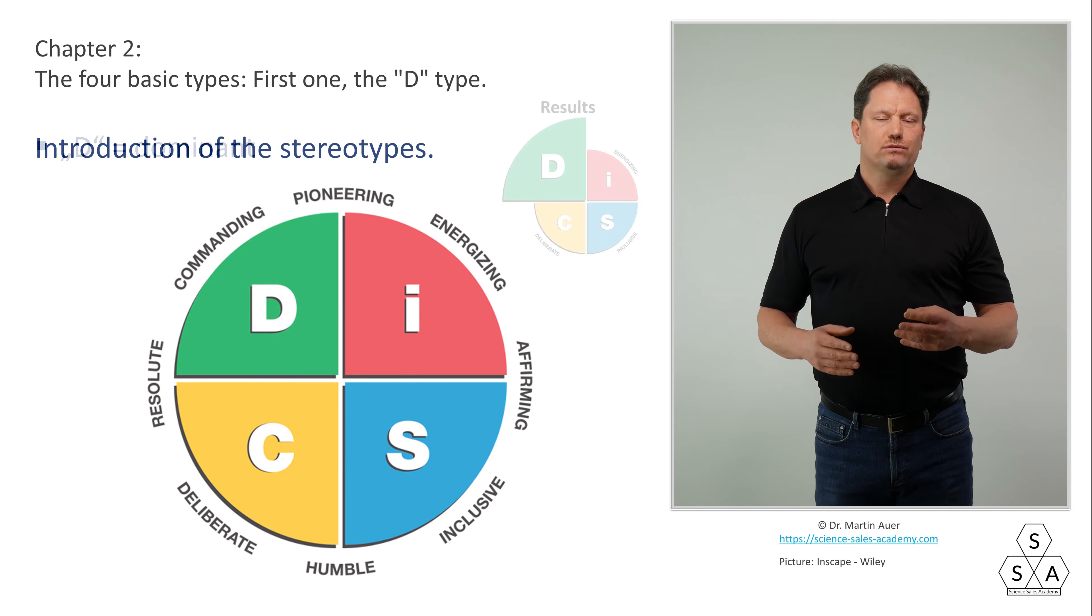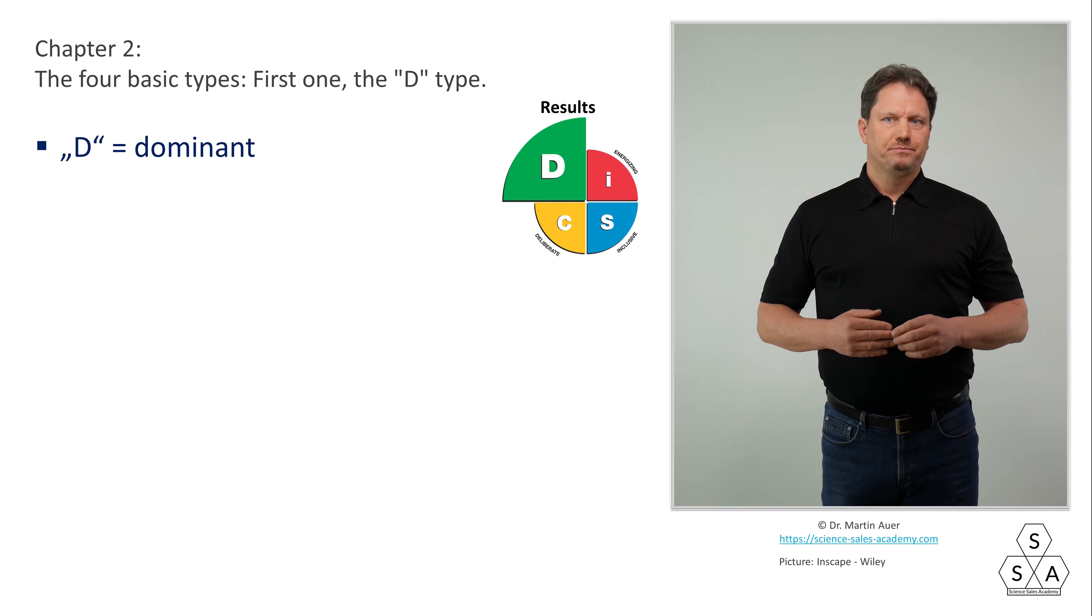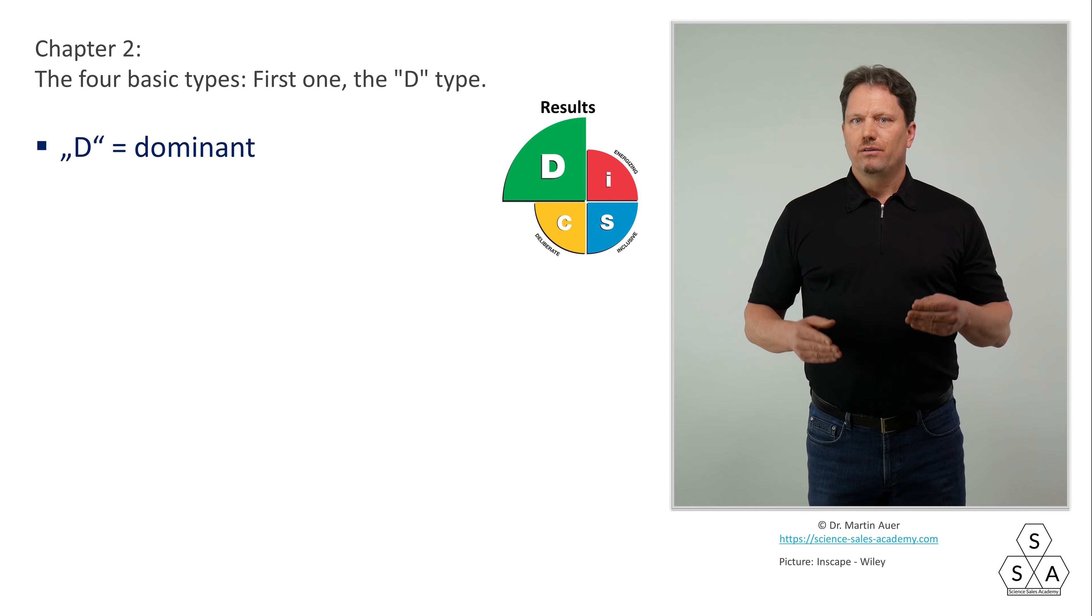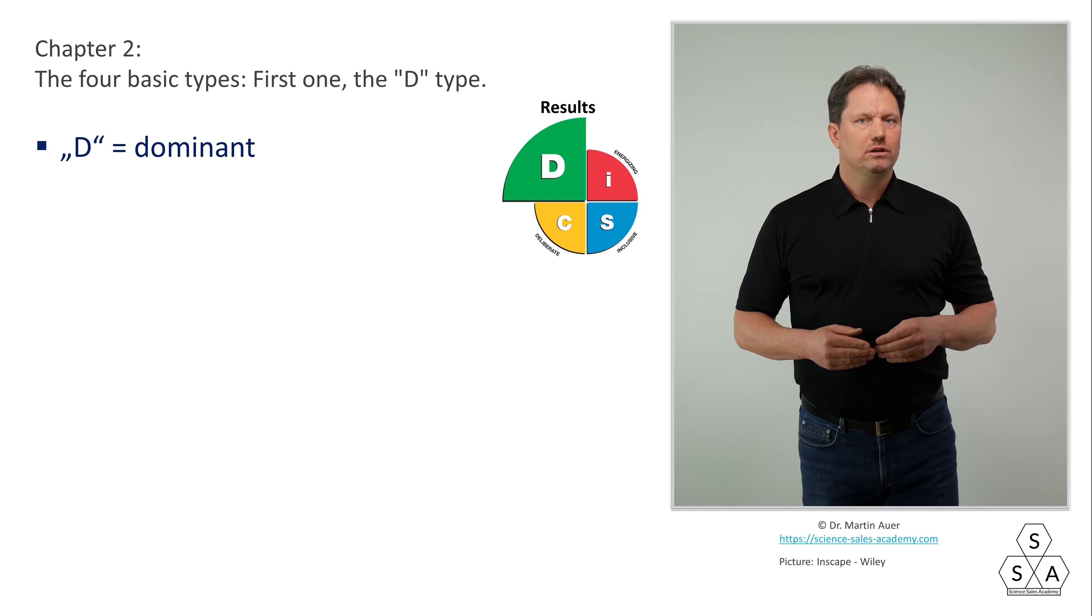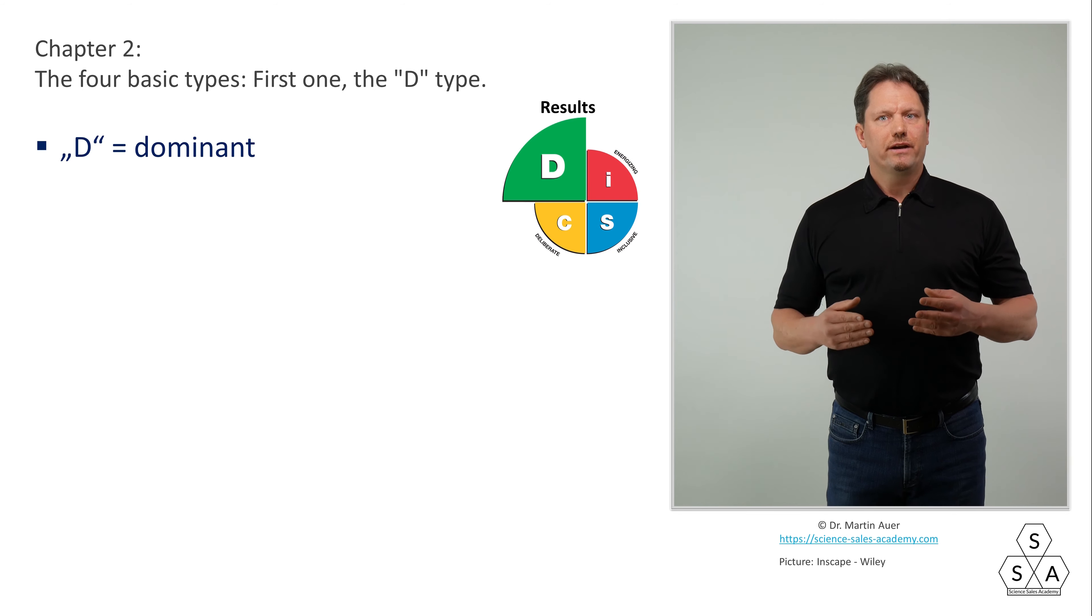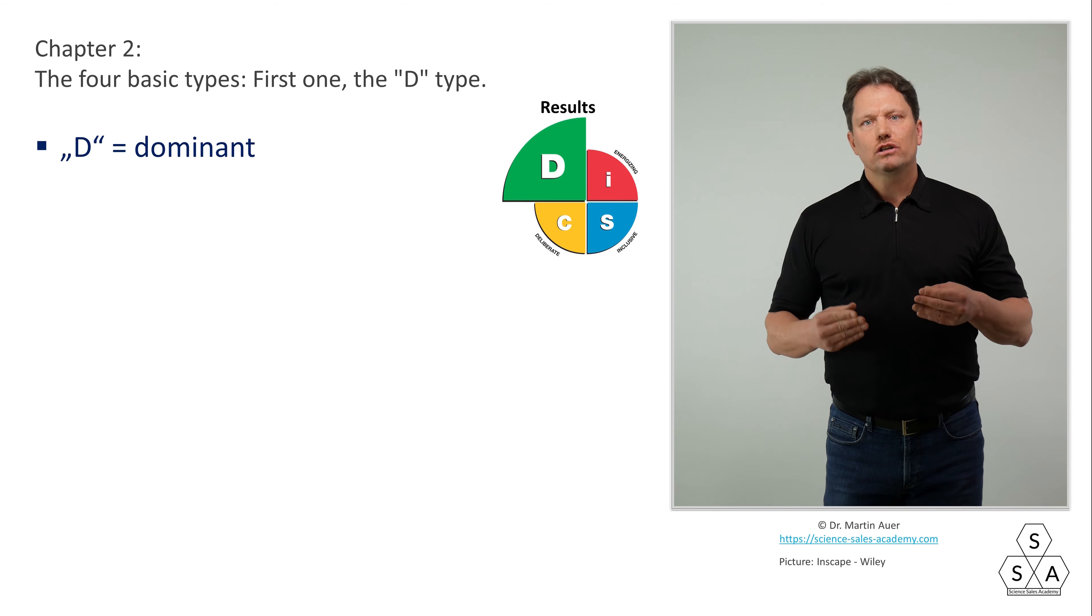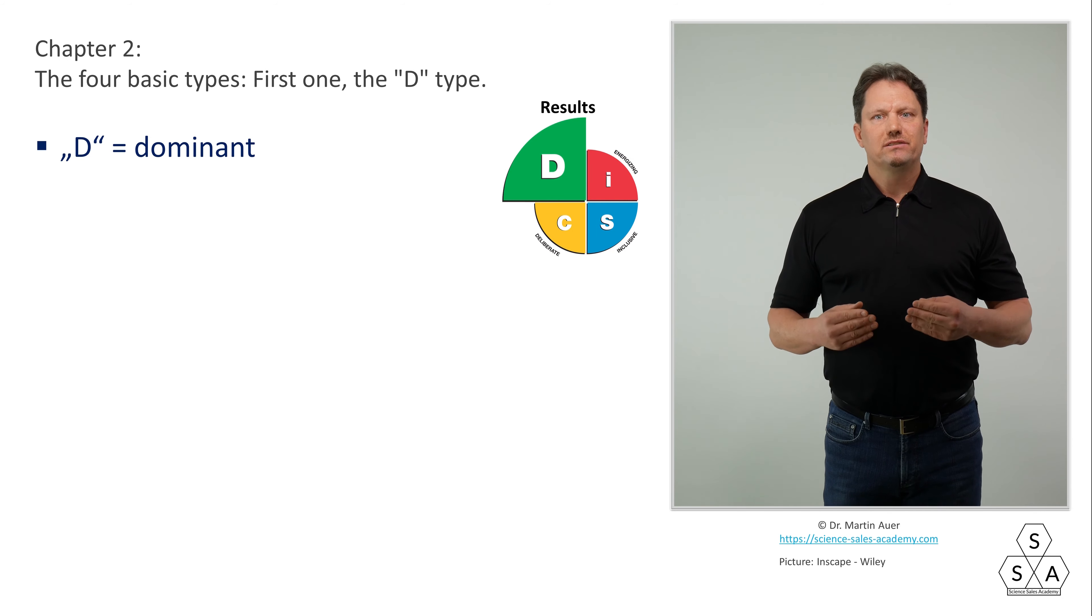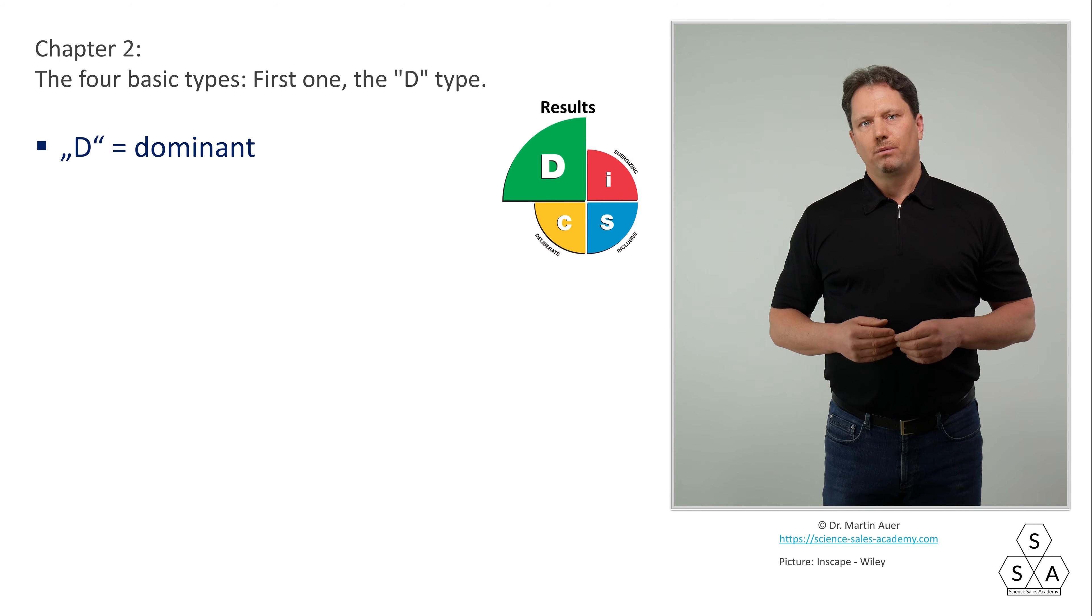The four quadrants are abbreviated by the four letters D, I, S and C. For a first approach, these four basic categories are usually sufficient. The letter D stands for dominant. It's the upper left quadrant. In the Wiley DISC model, the D-type has the color green. But the colors are completely irrelevant. They carry neither information nor meaning. We should not speak in colors. We should say this is a D-type behavior.